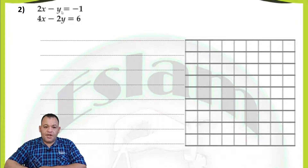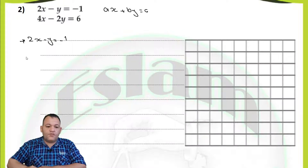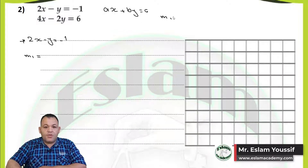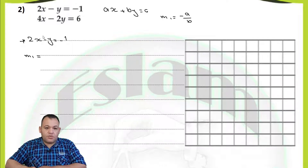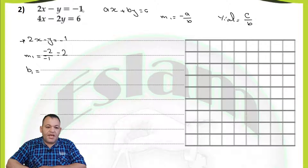In question number two, we have 2x minus y equals negative 1, and 4x minus 2y equals 6. The equations are written in the form ax plus by equals c. From the first equation, 2x minus y equals negative 1, we find m1 using the formula negative a over b. Here a equals 2 and b equals negative 1, so m1 equals negative 2 over negative 1, which equals 2. The y-intercept equals c over b, which is negative 1 over negative 1, equaling 1.